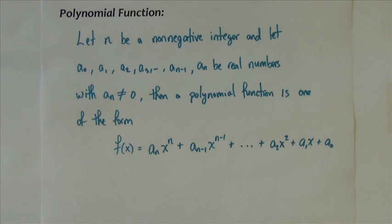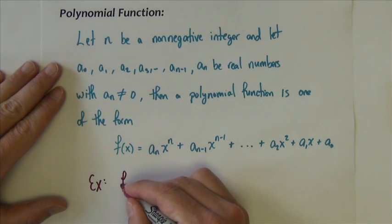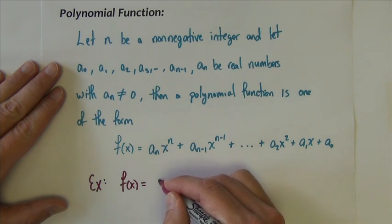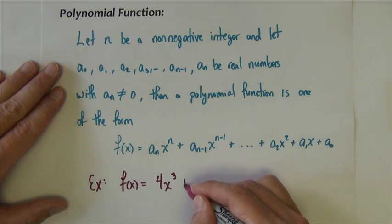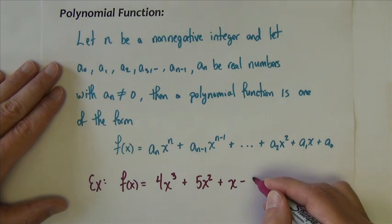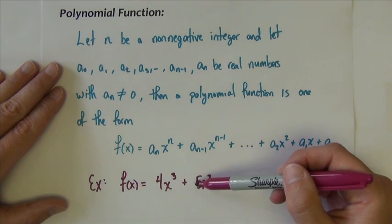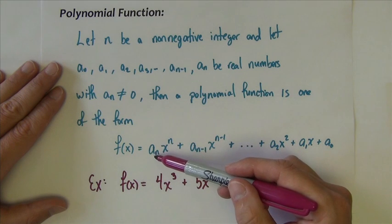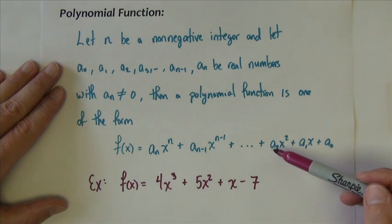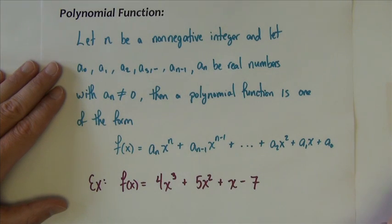We have seen functions like this before. The form might look somewhat confusing, but here's an easy example: f of x equals 4x to the third plus 5x squared plus x minus 7. That's a polynomial function. All the coefficients — the 4, the 5, the 1, and the constant negative 7 — are just the little a subscripts, and the powers of x decrease by 1 as we go.